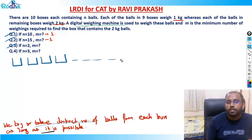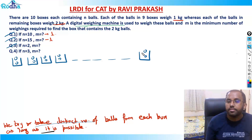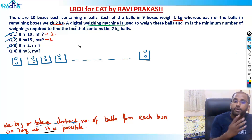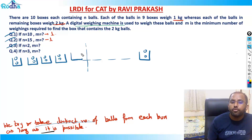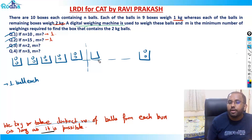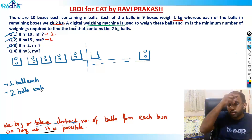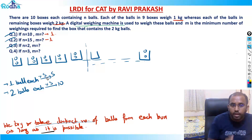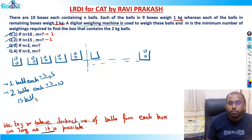With 10 bags and 2 balls each, from the first five bags I'll pick one ball each, and from the next five bags (six to ten) I'll pick two balls each. That gives me 5 balls plus 10 balls, totaling 15 balls. If I place them on a digital weighing machine, the ideal reading would be 15 kg.